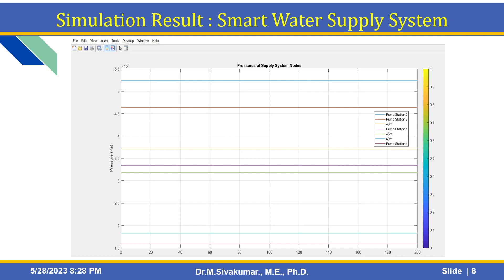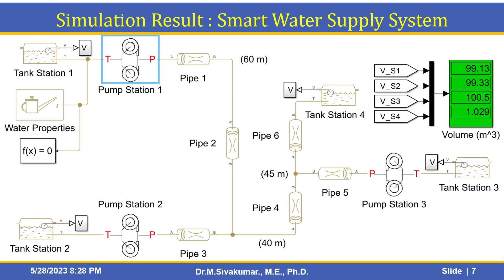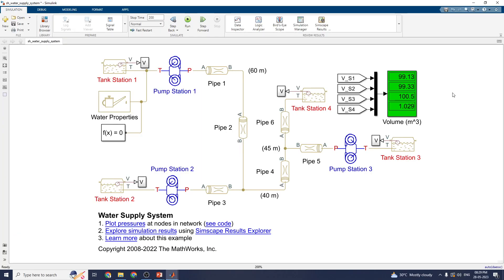The output shows pressure values for the water supply system. Some additional scopes are available where you can see pressure and also the mass flow rate at each node. There are four nodes considered for measuring the volume of water in each tank. Now let us see the simulation — this is the Simulink model of this smart water supply system.